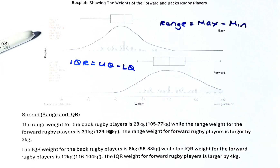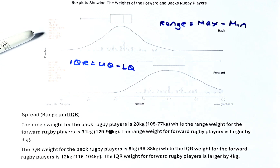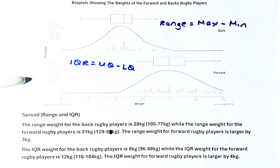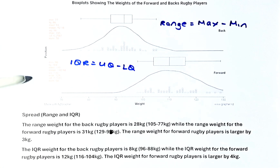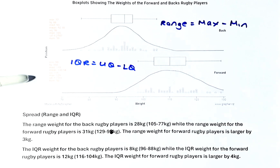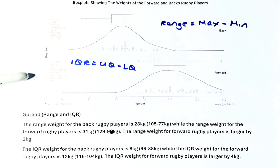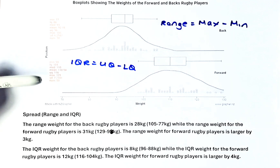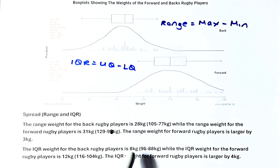Writing in words: the interquartile range for back players is 8 kg, because 96 minus 88 is 8 kg. The interquartile range for the forward rugby players is 12 kg, because 116 minus 104 is 12. So the IQR for the forward rugby players is 4 more, because 12 minus 8 is 4. In both cases, the range and interquartile range are larger for the forward rugby player.